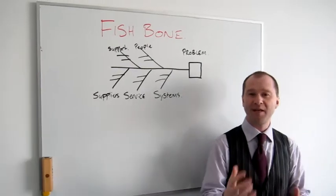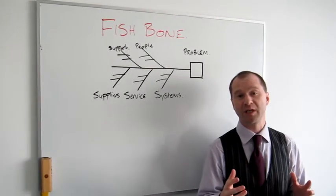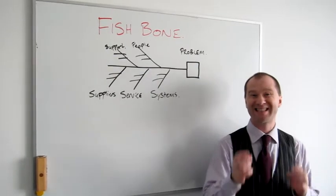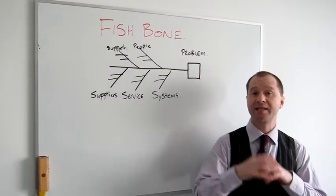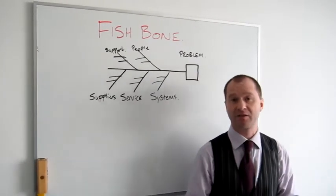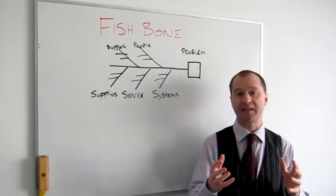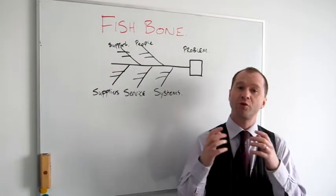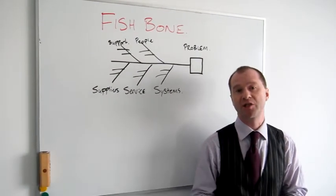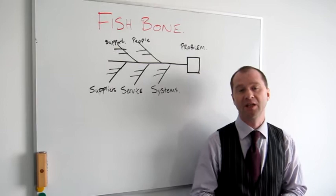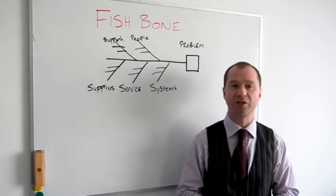The benefits of using a Fishbone Diagram or the 5 Whys is that it helps us accelerate the crystallisation and understanding of some of the root causes that go into generating the problem that we're trying to solve.